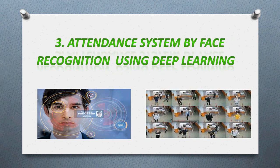The third project is an attendance system by face recognition using deep learning. In colleges and schools, attendance is taken by calling names and students saying 'present sir.' Instead, when a student enters the classroom, a camera identifies their face and detects who they are and whether they belong to that class, automatically recording their entry.